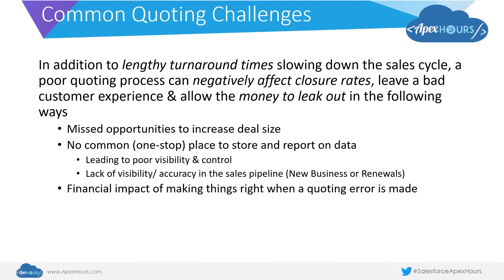For example, missed opportunities to increase deal size can have a huge impact. There is no common place to store or report on data, which can lead to poor visibility and control over discounting, lack of accuracy in sales pipeline — be it new business or renewals — and not to forget the financial impact of making things right with the customer when a quoting error is made. It looks bad to go and tell your customer, 'Sorry, we made a mistake on your quote.' You may end up giving them a freebie or a heavy discount to apologize.